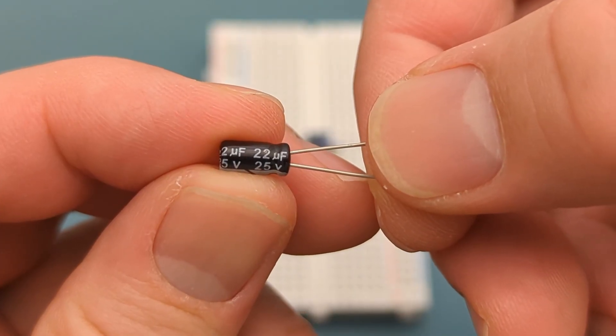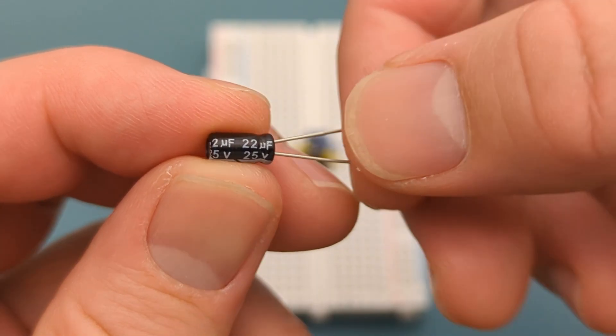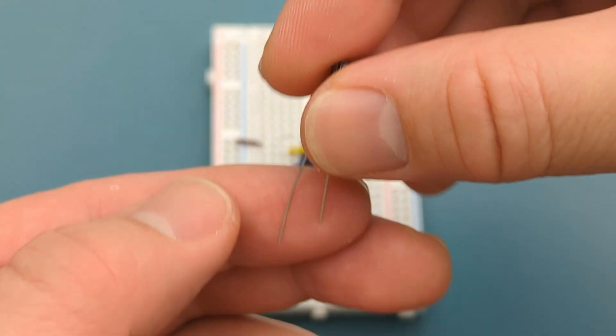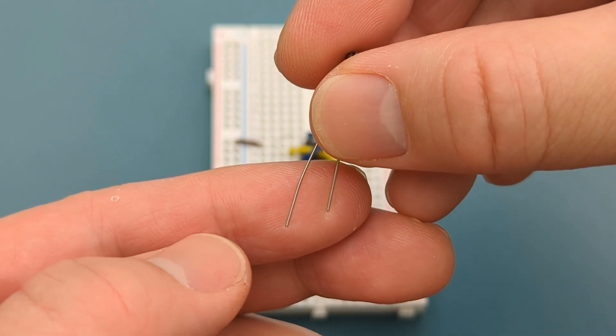Insert a 22 microfarad capacitor into pin 2 or trigger and the negative rail. The positive terminal is in pin 2.